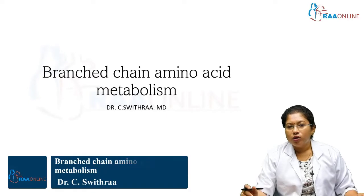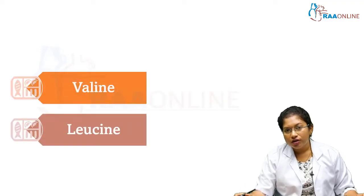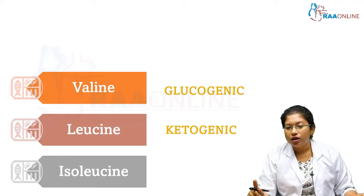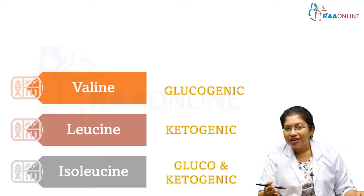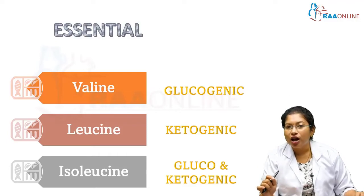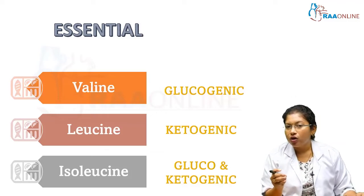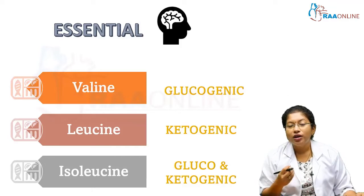Hello everyone. Now we'll see about the metabolism of branched chain amino acids. There are three branched chain amino acids in our body: valine, leucine, and isoleucine. Valine is glucogenic, whereas leucine is ketogenic, and isoleucine is both glucogenic and ketogenic. These are essential amino acids — they cannot be synthesized in our body and have to be supplied in the diet. All these branched chain amino acids help with muscle growth and energy production, and can be used as alternate fuel for the brain during starvation.